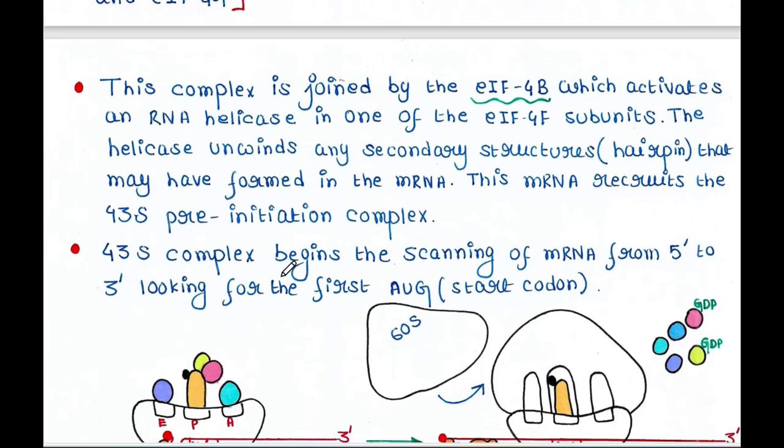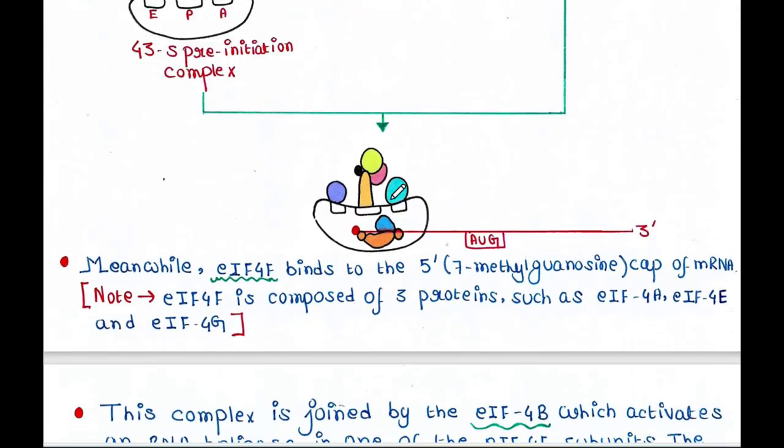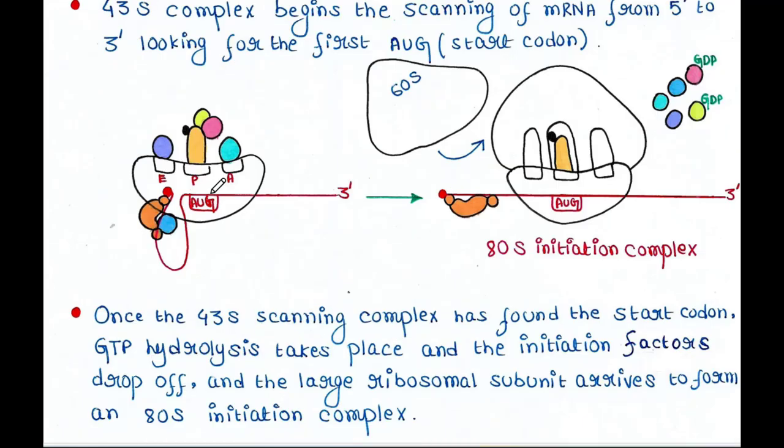Now the 43S complex begins the scanning of mRNA from 5' to 3', looking for the first AUG, or start codon. So it will start to scan the mRNA. Where is the start codon? So here is the start codon. So it will scan the mRNA and it will find the start codon, that is AUG.